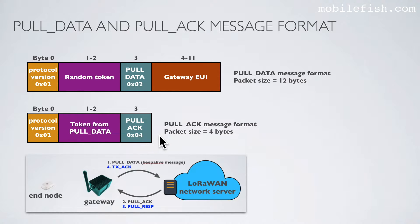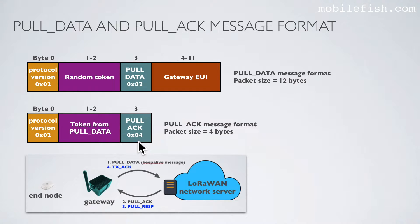This is the pull acknowledge packet message format. The packet size is 4 bytes. Byte 0 contains protocol version 2. Byte 1 and 2 contain the token from pull data — both tokens are the same. Byte 3 contains an identifier; value 4 means pull acknowledge.